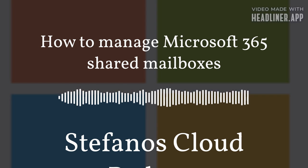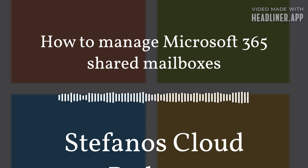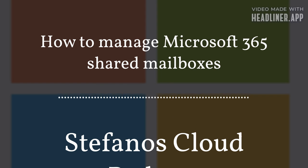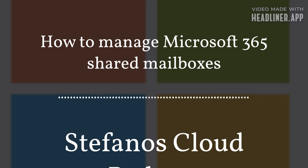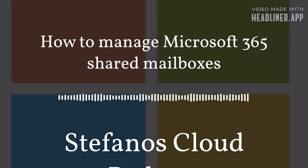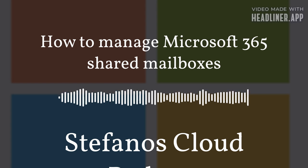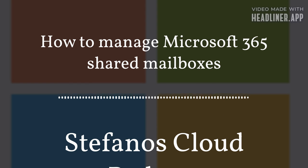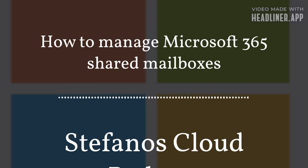Now that you have set up the shared mailbox, you can access it via any of the available email apps — namely Outlook on the Web, Outlook for Desktop, Exchange Web Services, Exchange Active Sync, IMAP, and POP. For example, to access the shared mailbox from the Outlook on the Web account of any member of the shared mailbox, carry out the following steps.